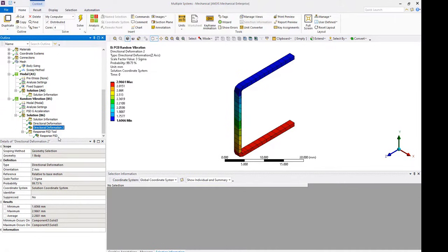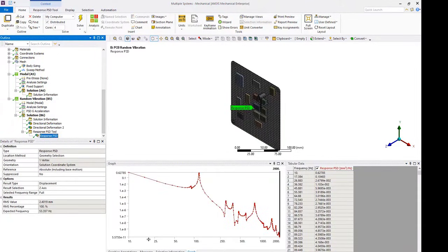The response PSD provides information as to where the average power is distributed as a function of frequency. The peak G-acceleration response occurs at the resonant frequencies on the assembly. This completes the demo.